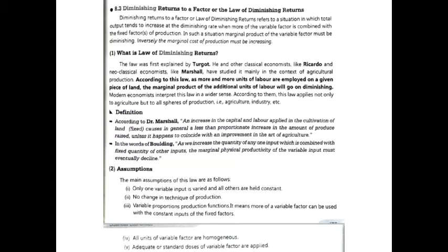First we discuss what is the law of diminishing return. According to this law, as more and more units of labor are employed on a given piece of land, the marginal product of the additional units of labor will go on diminishing. That means when we have fixed factors like land, as the number of labor increases, every labor we employ shows diminishing marginal product.